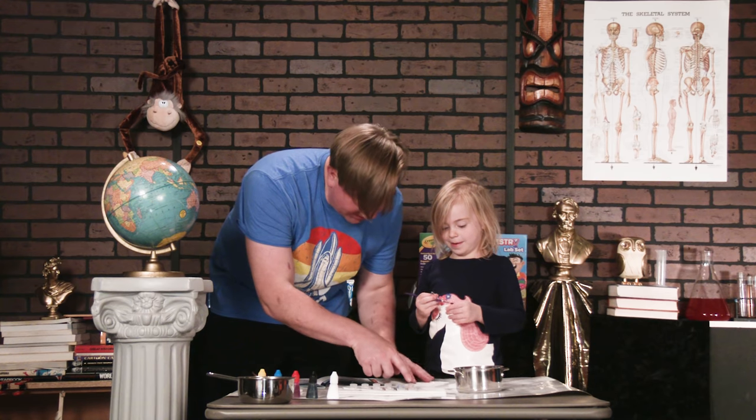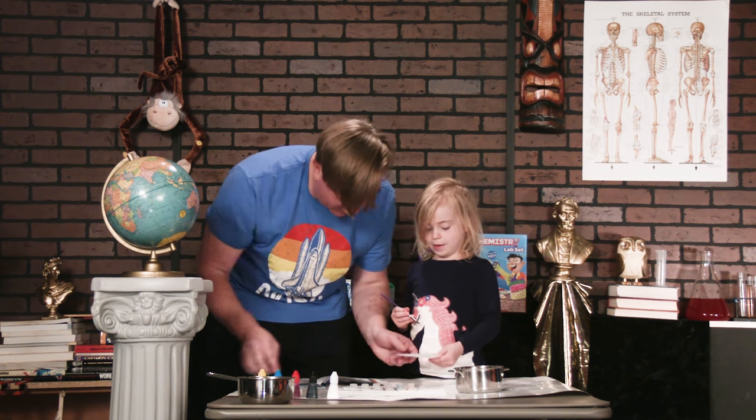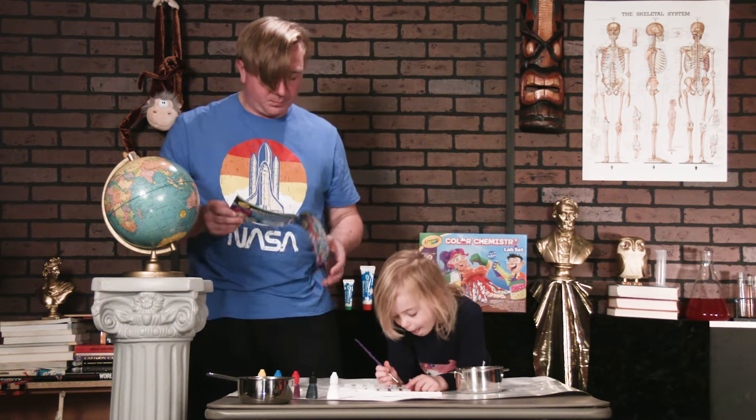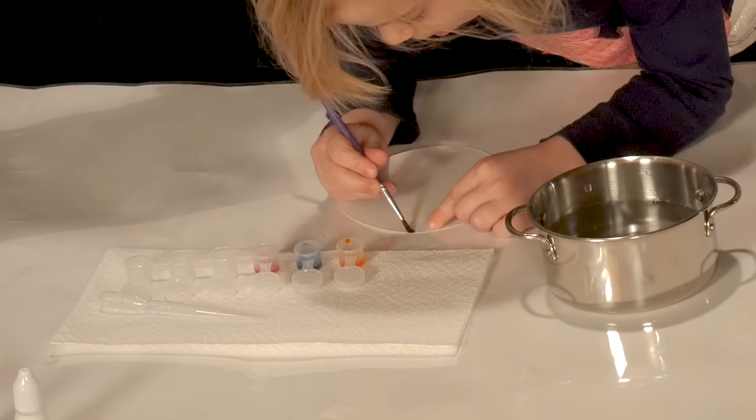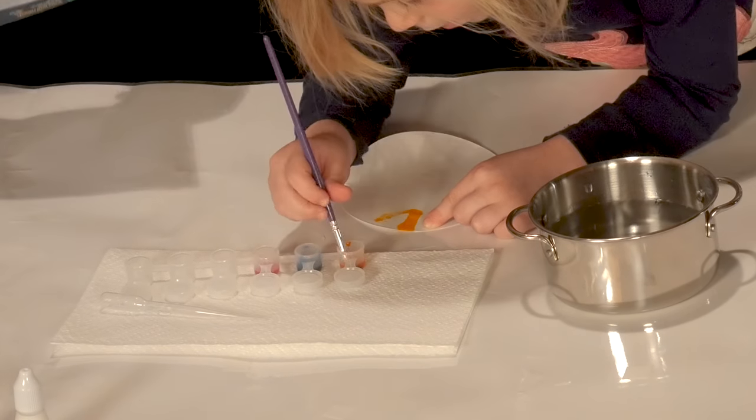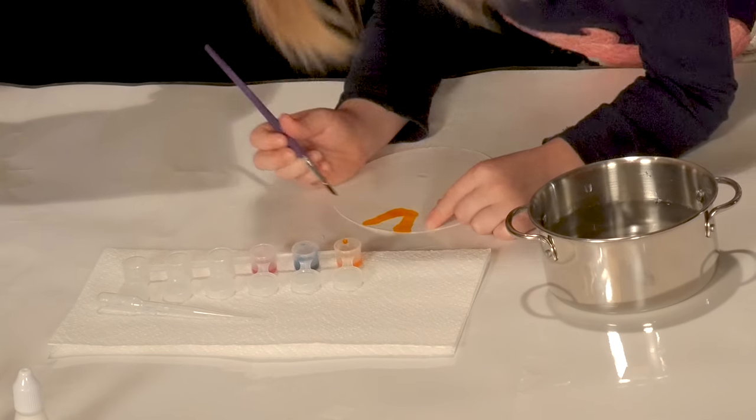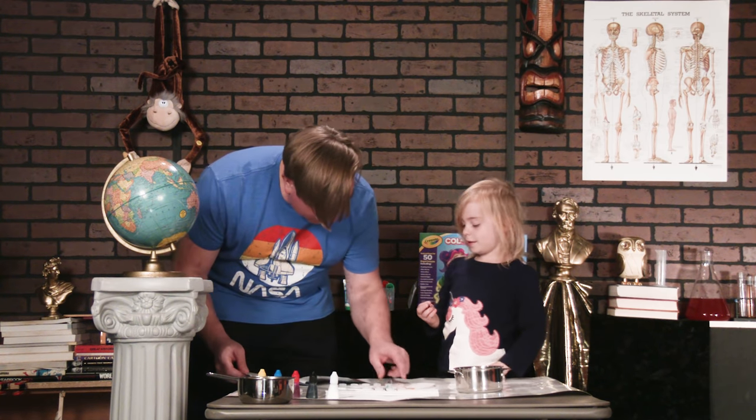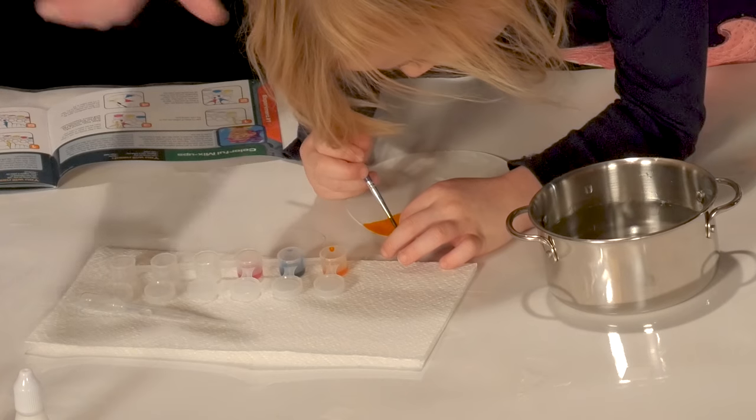So you're going to take a little bit of the yellow and we're going to put it on right there. Make like a triangle. Pretty good. Ta-da! Nice! Can you color in the middle? Perfect!